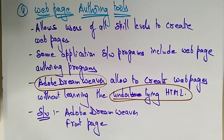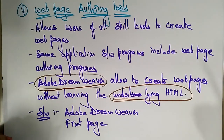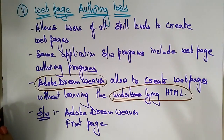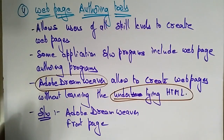So these are all the different types of authoring tools: card and page-based tools, icon-based event-driven tools, time-based tools, and web page authoring tools. Thank you.